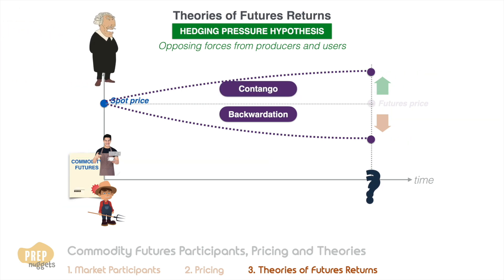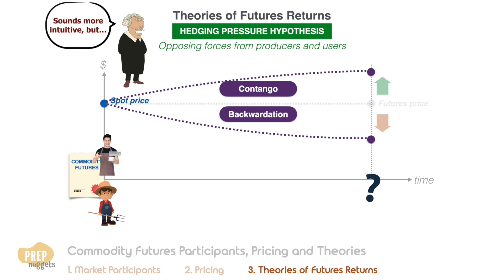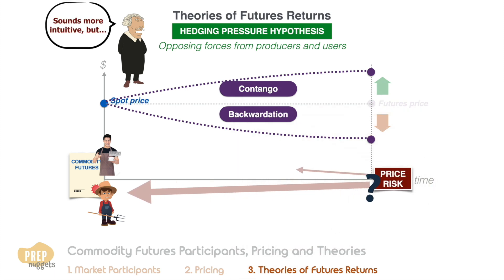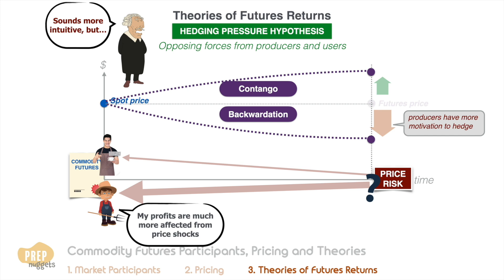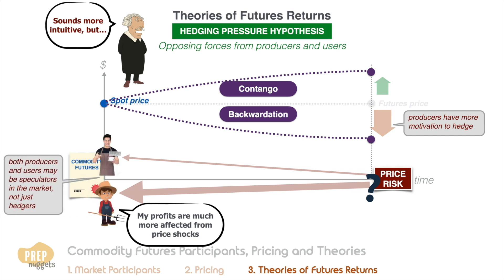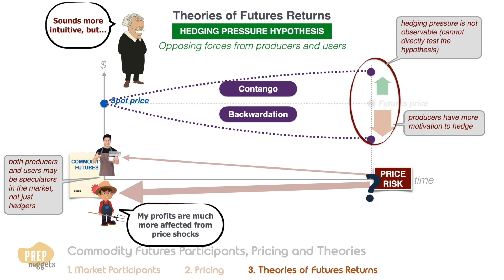Despite its intuitiveness, this theory has some shortcomings. Producers typically face more concentrated price risk than users — that is, a producer's profits are much more affected by a single commodity price than a user's, meaning producers have much more motivation to hedge. Furthermore, both producers and users may be speculators in the market, not just hedgers. Another problem is that hedging pressure is not observable, so we cannot directly test the hypothesis that relative hedging pressure is the cause of backwardation and contango.